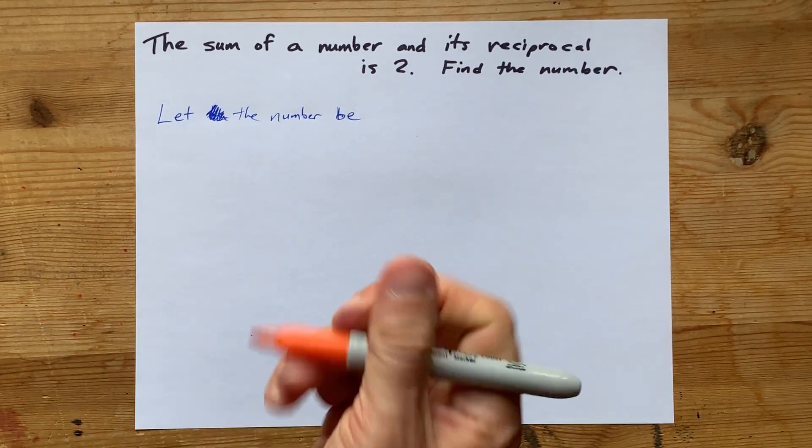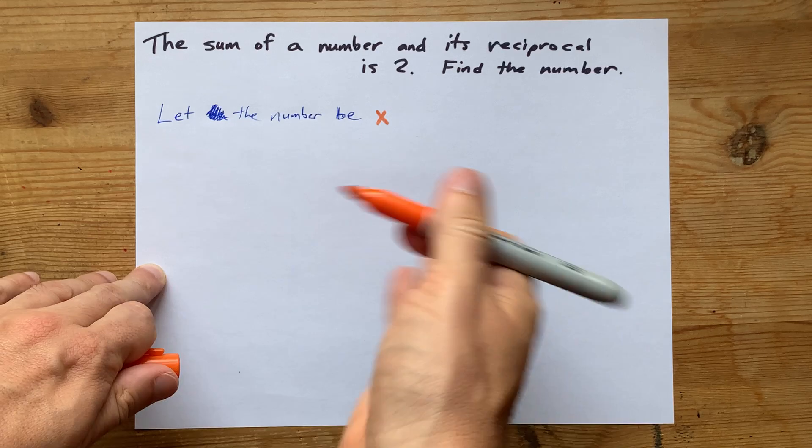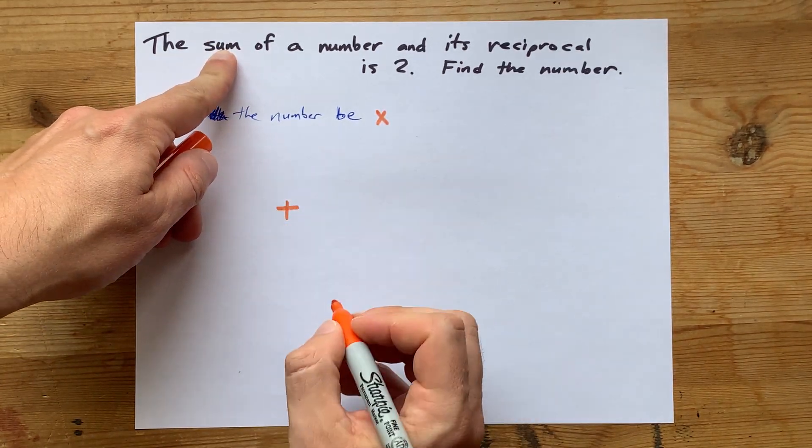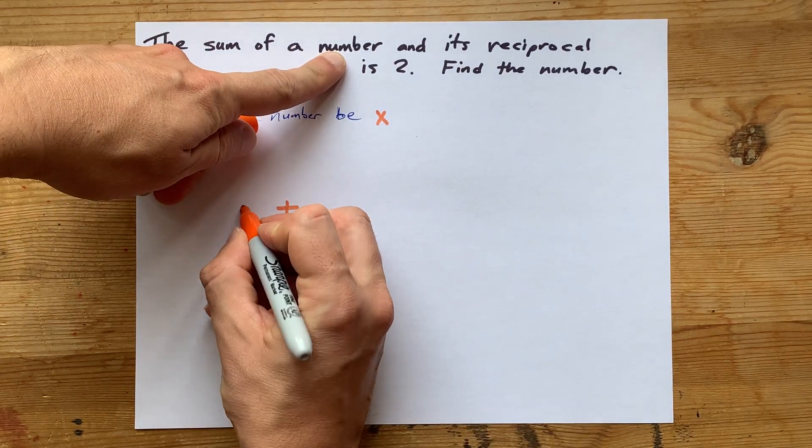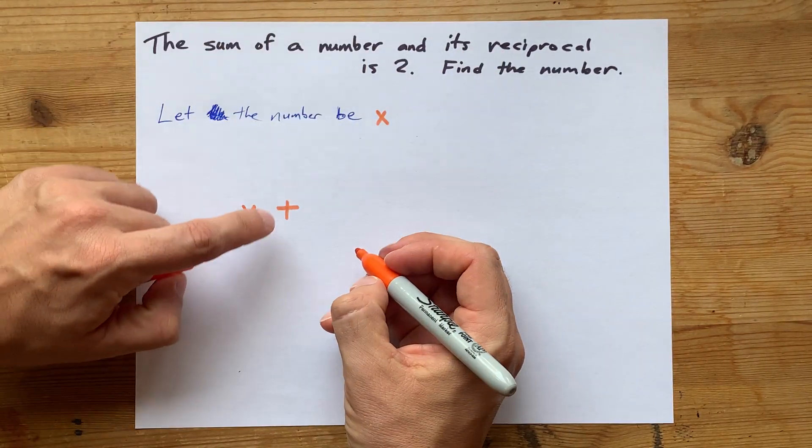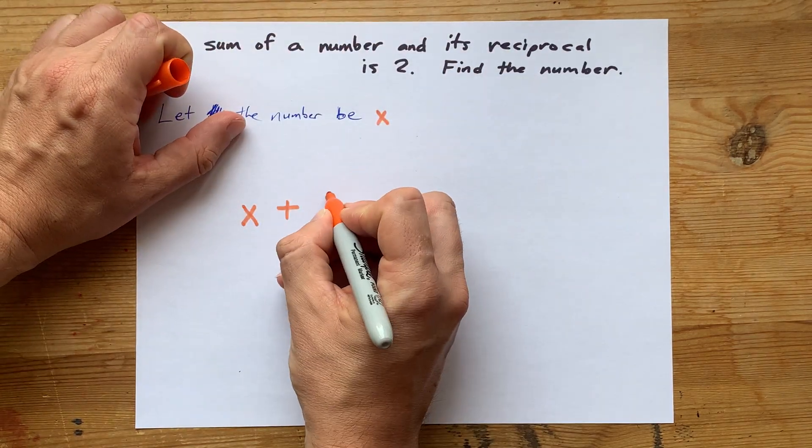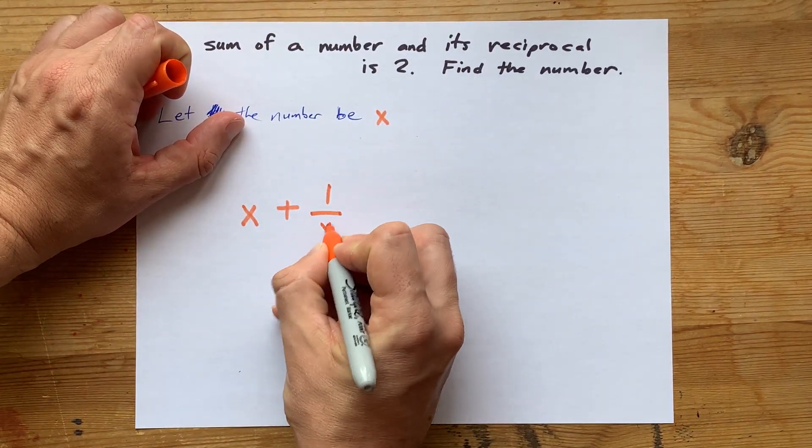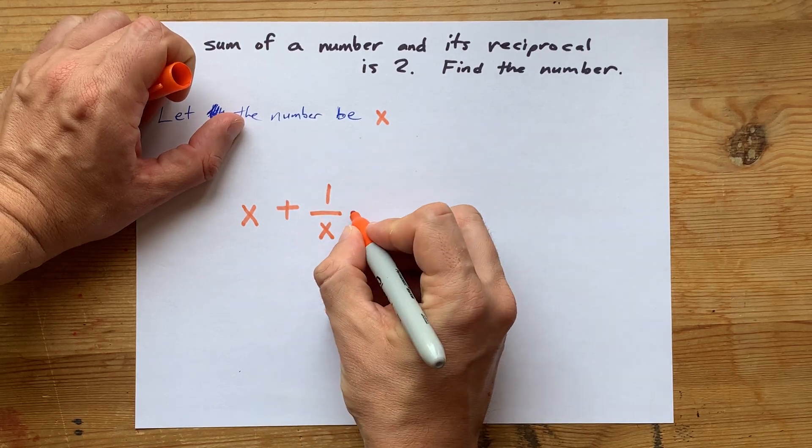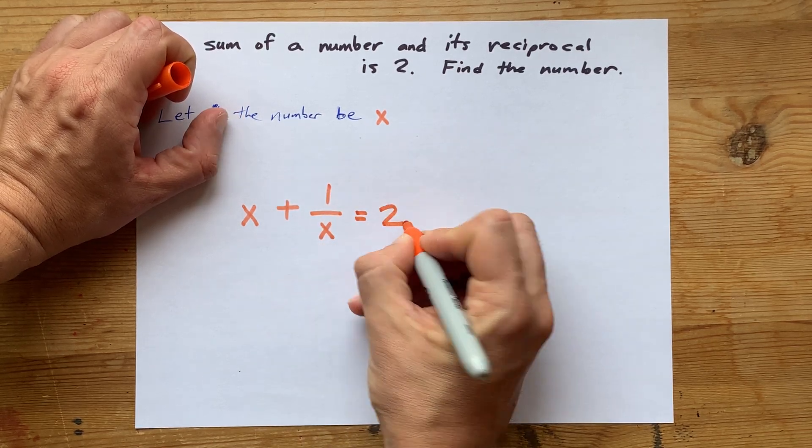Let the number itself be x. All we were told is that the sum, which is the addition of two things, of that number x and its reciprocal. Now its reciprocal means by definition one over that number, so this is x plus one over x, and we're told that that sum is two.